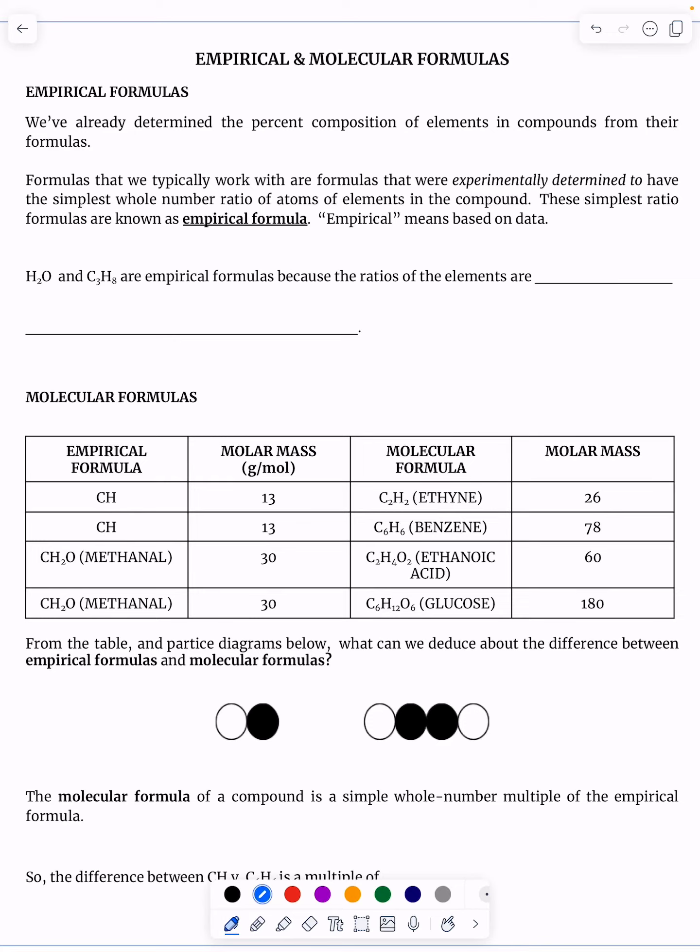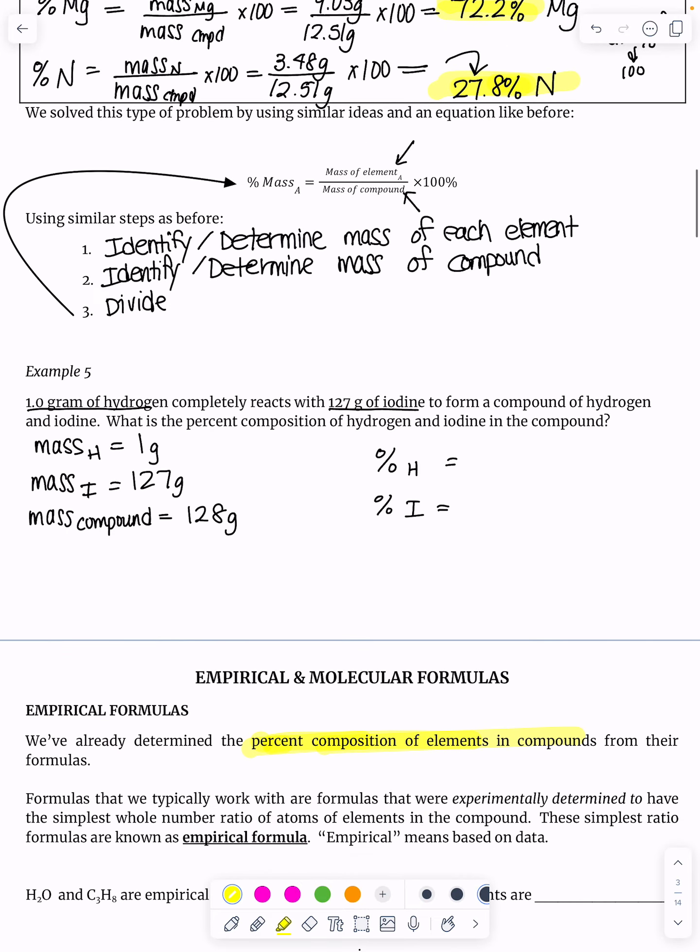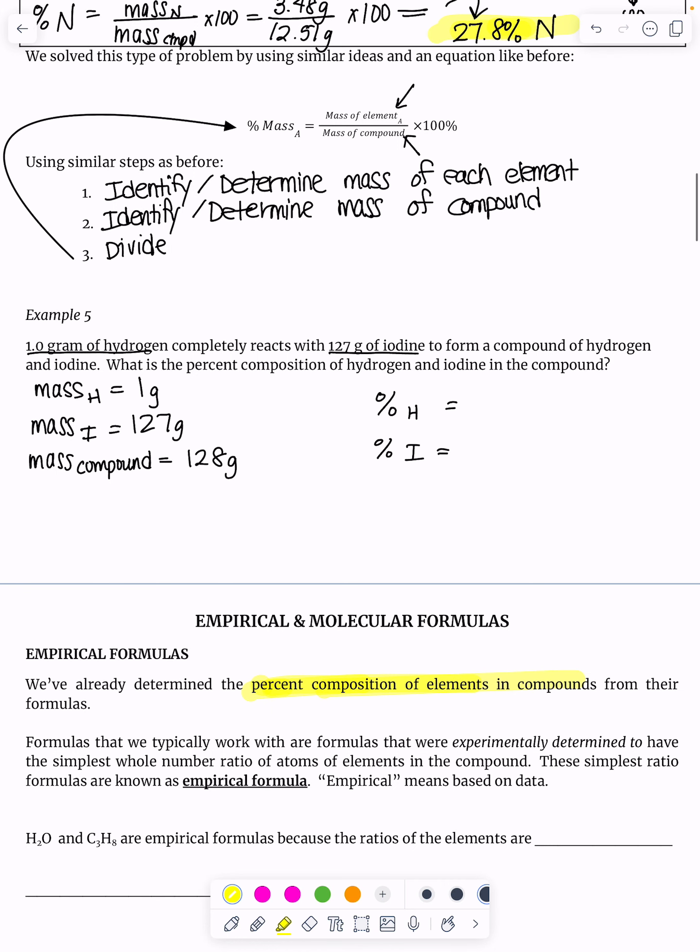So we've already determined the percent composition of elements in a compound, and we saw that in the previous one where I'm going to start with, for example, doing this example five that I left you to do on your own.